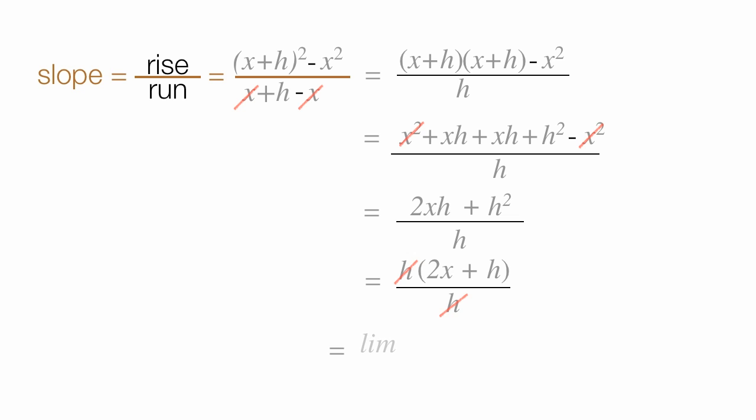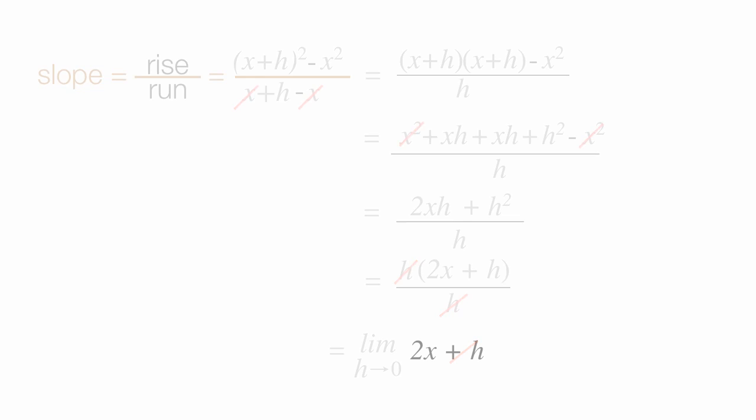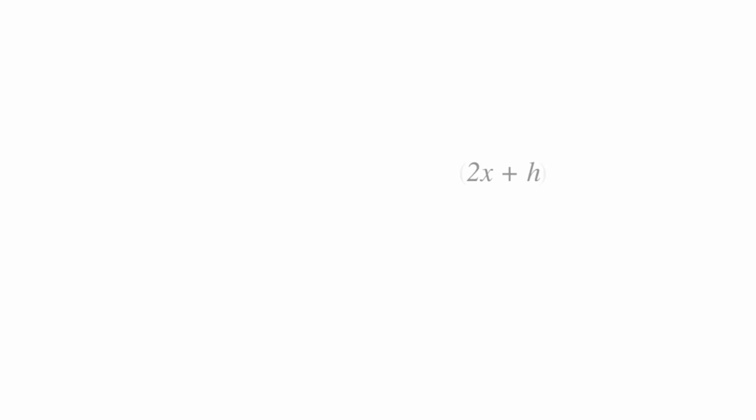and I am left with the limit as h goes to zero of 2x plus h is equal to 2x. I'm going to show you that more formally. If h is approaching zero, we can just kind of ignore it. That h is just ignored, so it's equal to 2x.